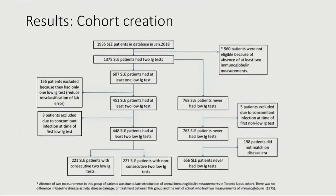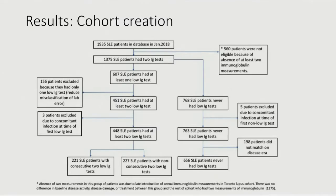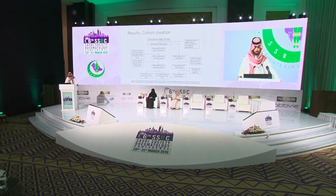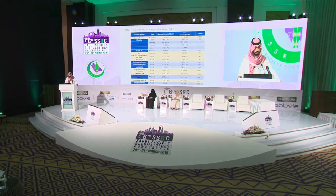Regarding the cohort creation, this is one of the largest cohorts on Earth for lupus. We have about 2,000 patients with lupus that was started since 1970. The key point is really the lower part — the exposure and the control group. The people with low immunoglobulin were about 400 patients, and the control group was about 600 patients. The details of the exclusion were highlighted above.